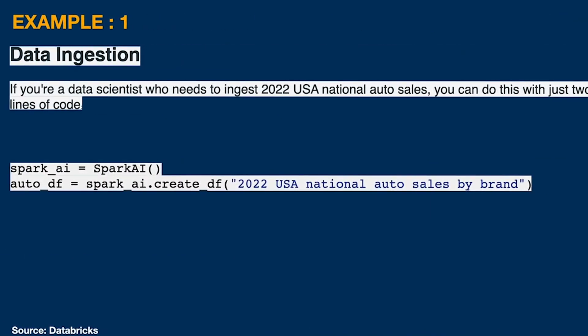Example one: the PySpark English SDK can be used for the data ingestion process. For example, if you are a data scientist who needs to ingest 2022 USA national auto sales data, you can do this with just two lines of code. Initialize Spark AI using `spark_ai = SparkAI()`, then call `spark_ai.create_df()` and write in natural language: '2022 USA national auto sales by brand.' It simply creates the DataFrame with that data. See how easy it is!